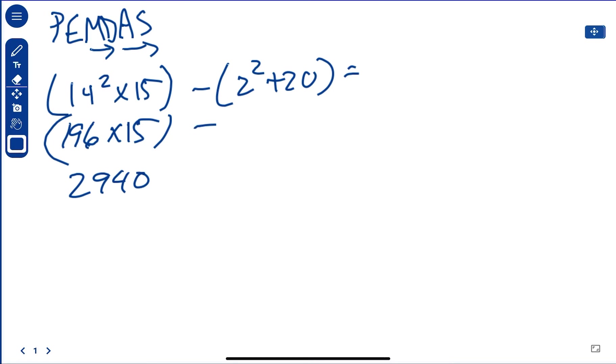So if we come over here, 2 squared is 4 plus 20 is going to be 24. So 2,940 minus 24 is going to be 2,916.